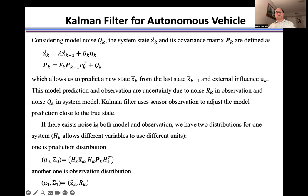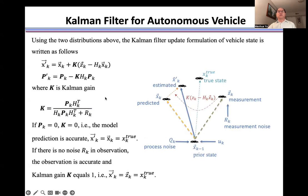In a noisy environment, for one system we have two distributions: one is for the prediction, one is for the observation. Using these two distributions, we can derive the Kalman filter update formulation for the self-driving vehicle. This gives us the Kalman filter state estimation — one term from the model prediction and one from the measurement or observation, combined using the Kalman gain.